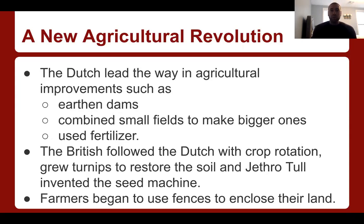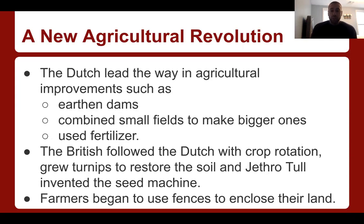The agricultural revolution — the Dutch really lead the way in this and they make many improvements such as earthen dams. They combine small fields to make bigger ones and they use fertilizer, which allows crops to grow in greater number. If you're able to grow more crops, that means there's more food to feed people. The British followed the Dutch with crop rotation; they grew turnips to restore the soil, and Jethro Tull invents the seed machine. The seed machine is important because they're able to seed these fields faster, and if you're able to do these things faster, you're able to grow more.